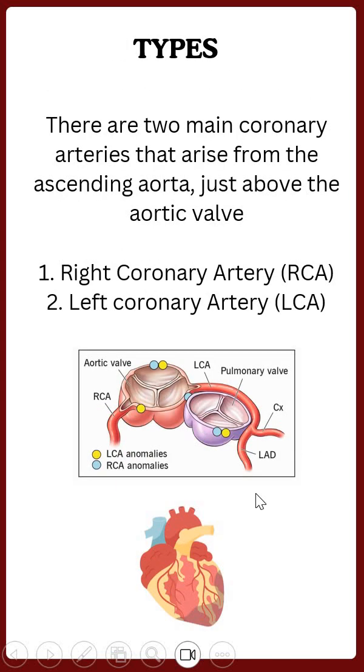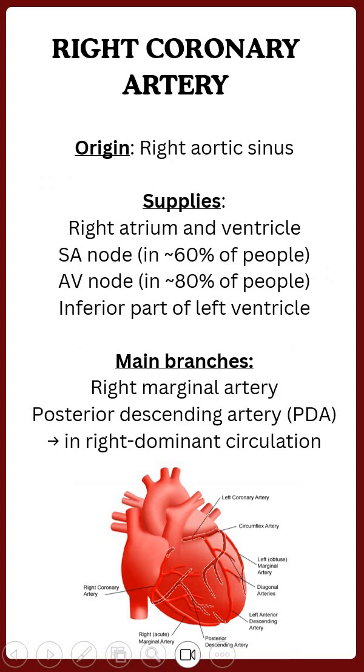Now the types of coronary arteries. There are two main coronary arteries that arise from the ascending aorta just above the aortic valve. They are the right coronary artery and the left coronary artery.